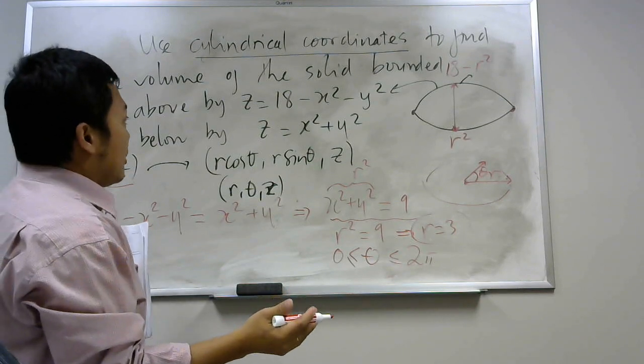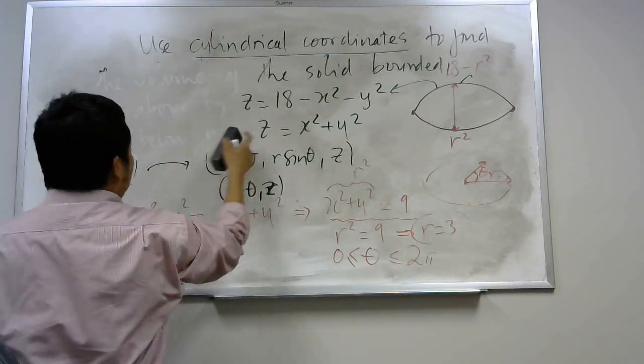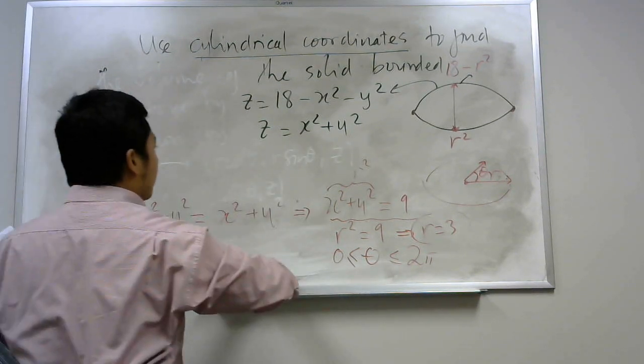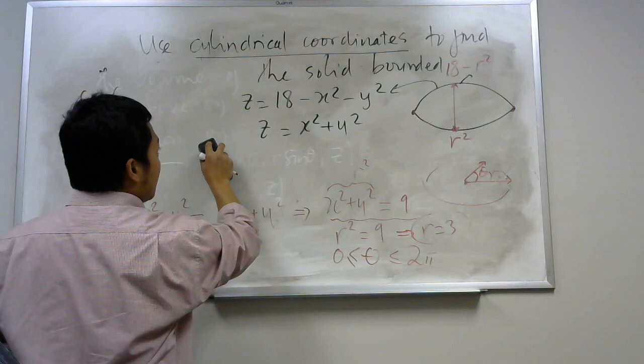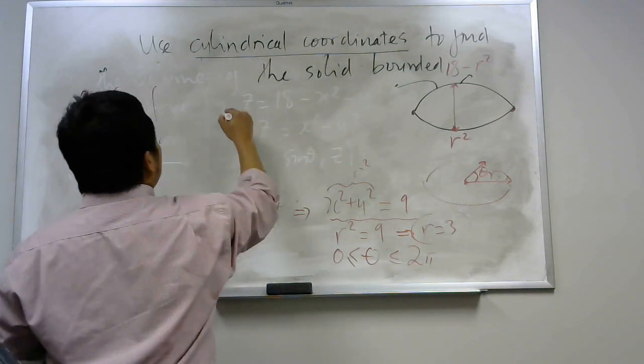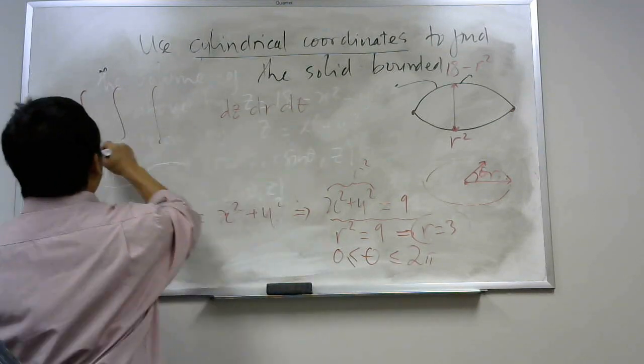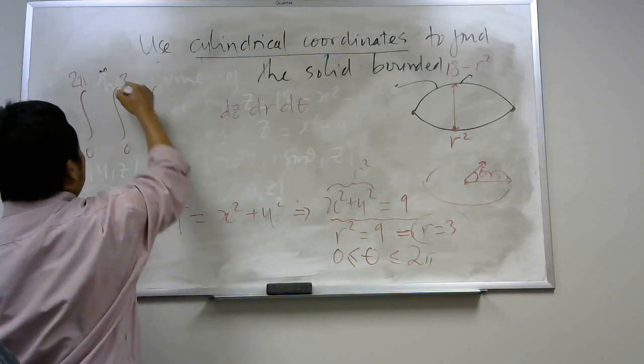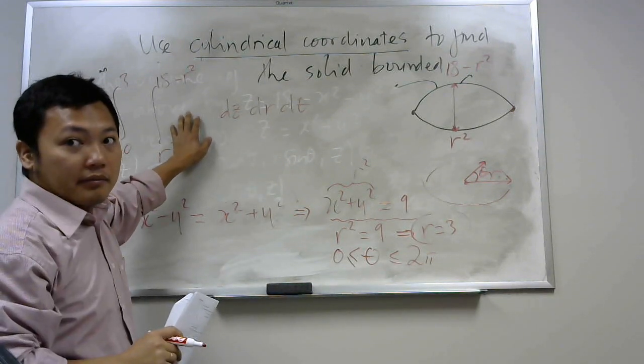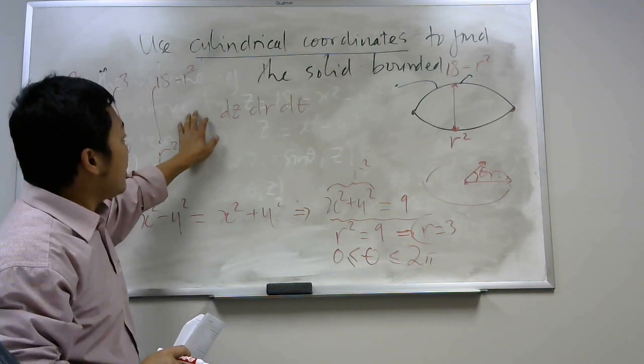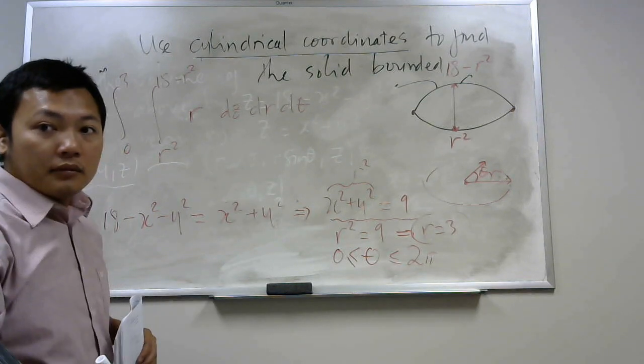Now we have all the information. Let's write the triple integral to find the volume of this solid. So let me erase this, I want to keep this. Our integral, if I write the triple integral, in here I have dz, dr, and dθ. So theta from 0 to 2π, r from 0 to 3, and z from r² to 18 - r². But don't forget about the Jacobian. When you do change of variable, you have to multiply by the Jacobian, and the Jacobian in this case is equal to r.